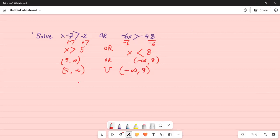Notice on the left, the first inequality goes 5 all the way to positive infinity on the right hand side of 0. The second inequality stretches all the way from negative infinity on the left to 8. So what is the solution?